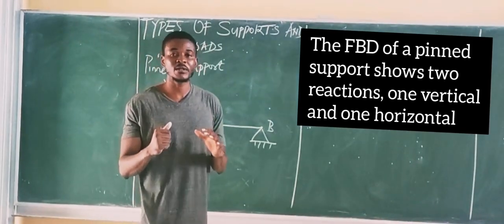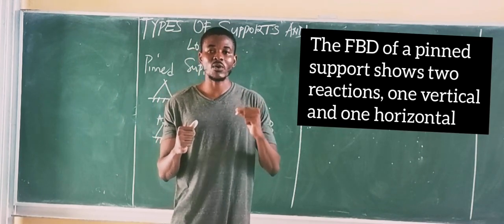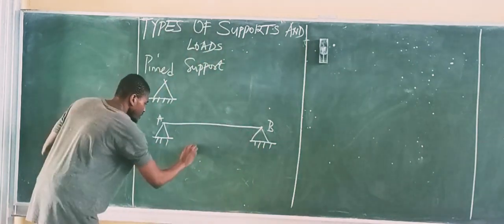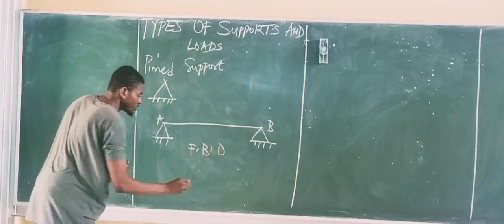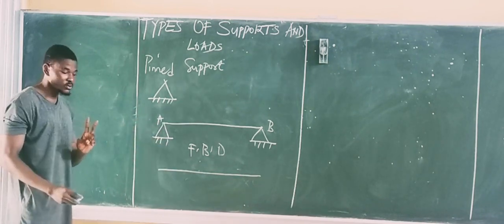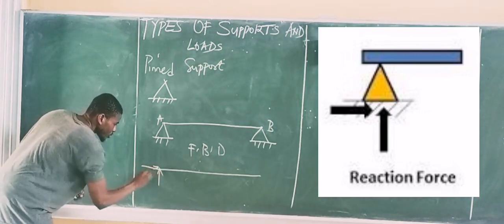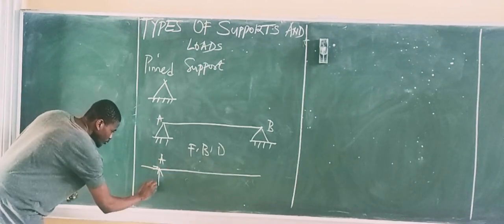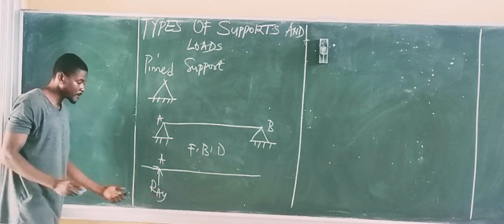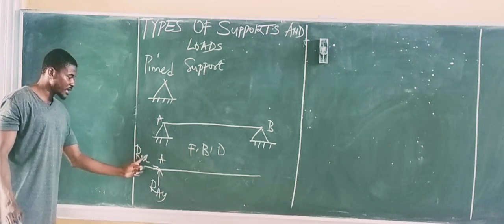In order to apply the free-body diagram of the Pinned Support, we always have to show two reactions — one vertical and one horizontal — at the point of occurrence of the pin. We use R-A-Y to signify the vertical reaction at point A, and R-A-X to signify the horizontal reaction at point A.